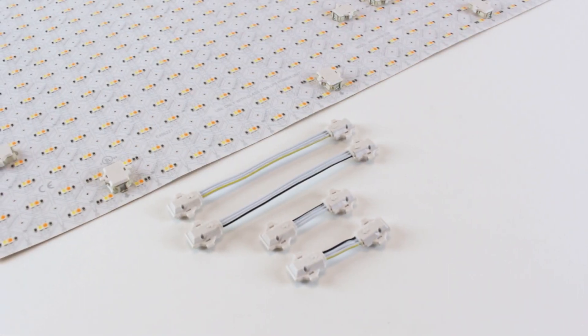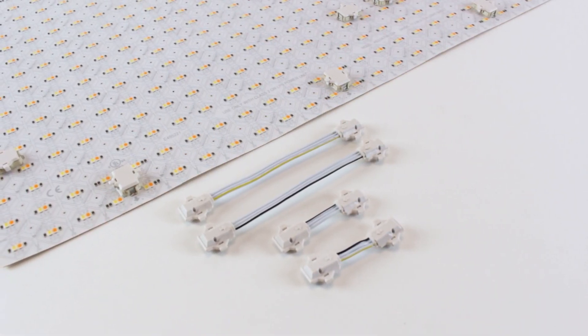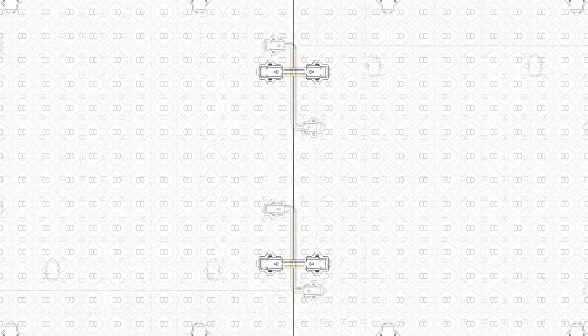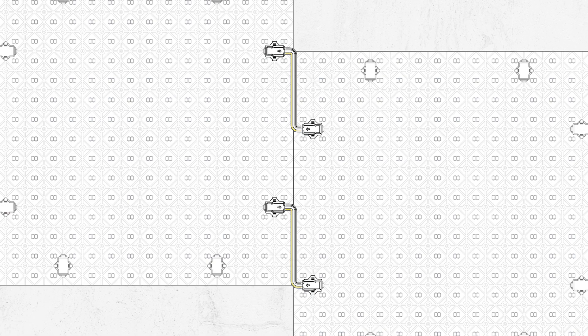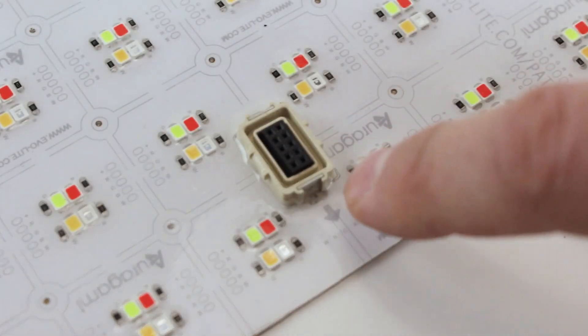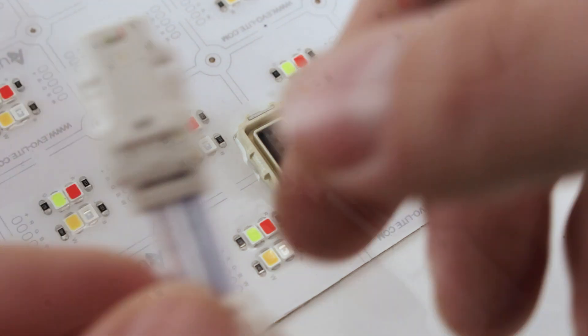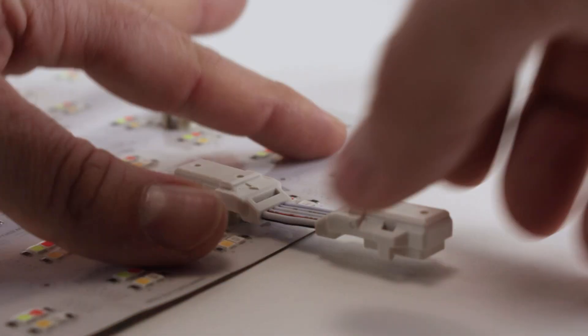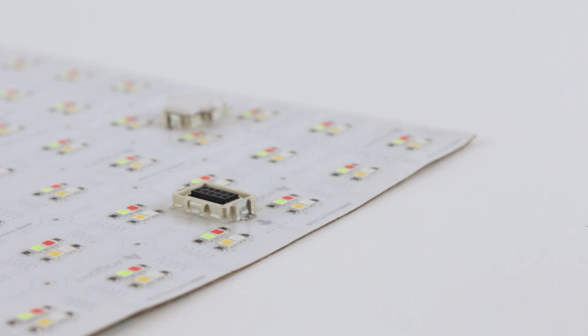Each lightsheet comes with two long and two short sheet connectors. Use short connectors to join adjacent sheets and long connectors to join offset sheets or to span gaps. To make a connection, simply match the connector's arrow with the sheet's terminal arrow and press the connector into place. Remove connectors by pulling up on the connector wings or the wires near the connector ends.